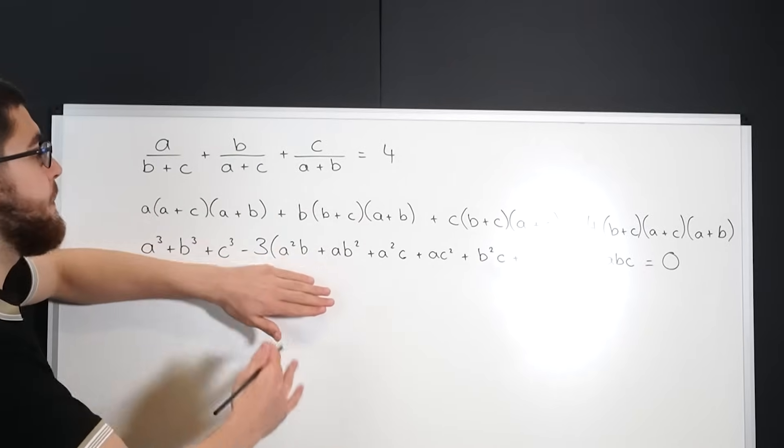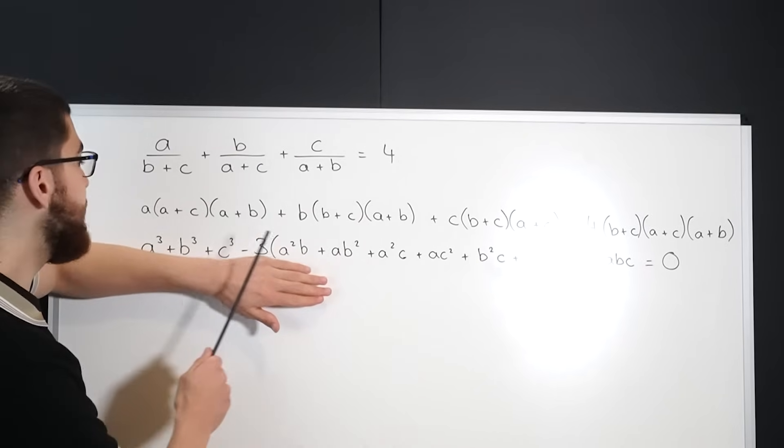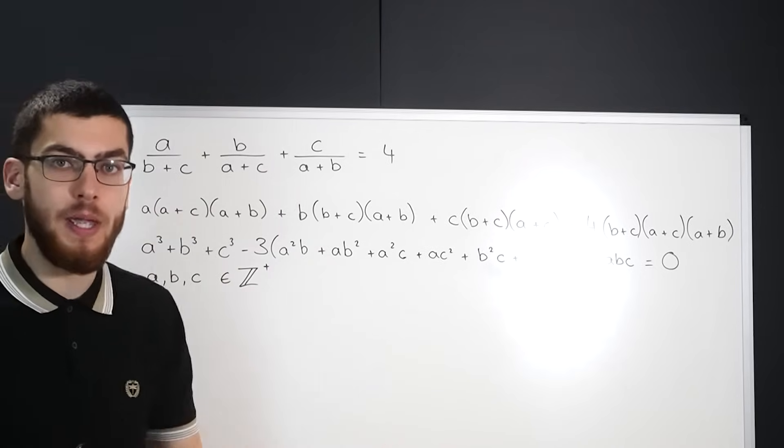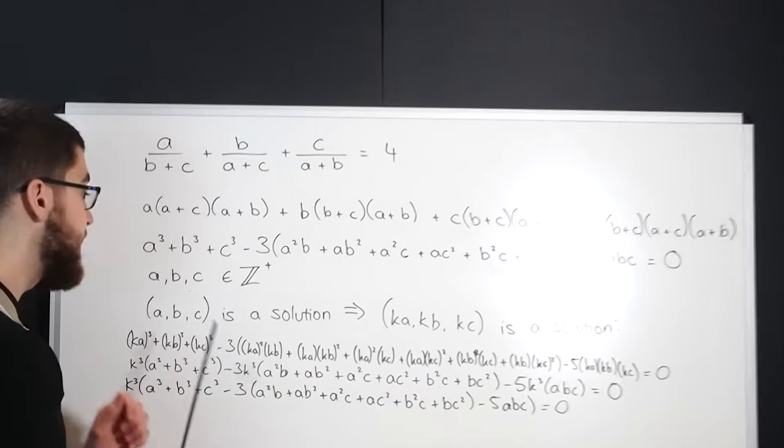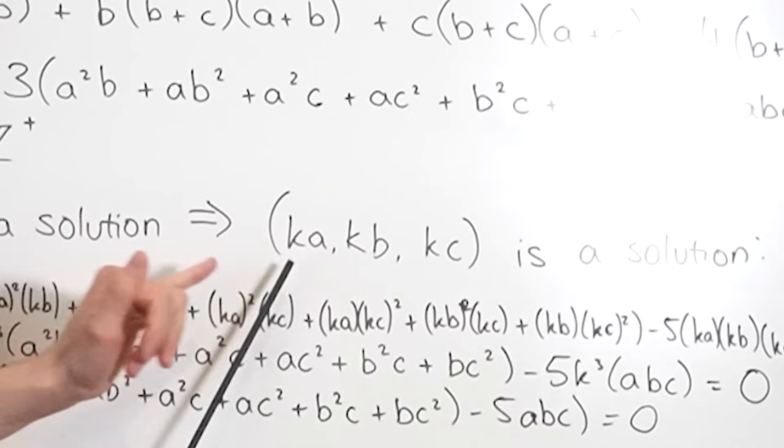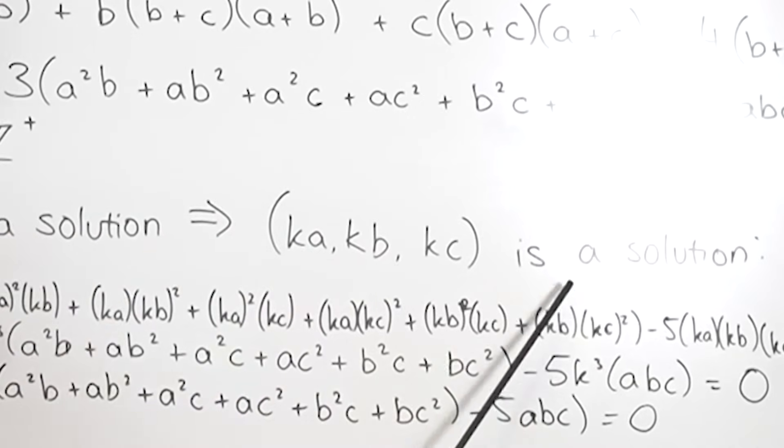But these all have to be positive integers, so whatever number we plug in as A and B we have to make sure that C is also going to be a positive integer. Also notice that if A, B, and C is a solution to this equation then K*A, K*B, and K*C is also a solution.